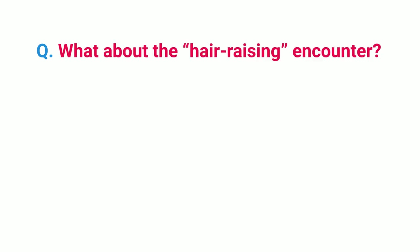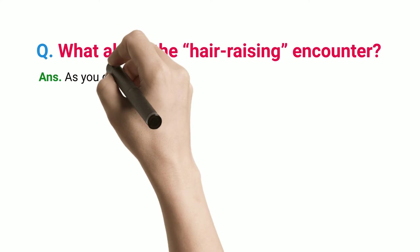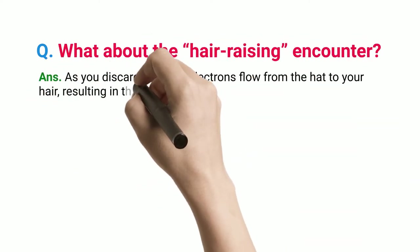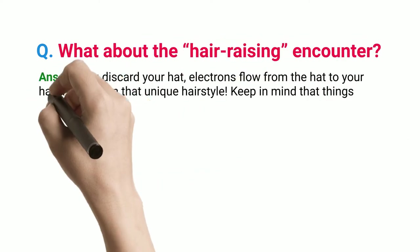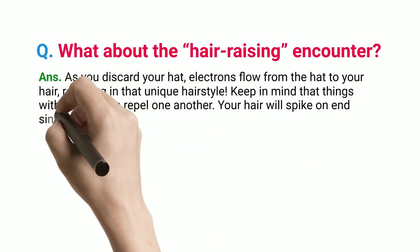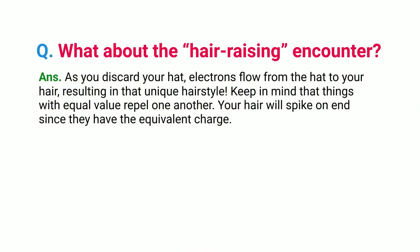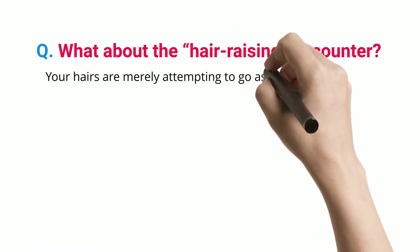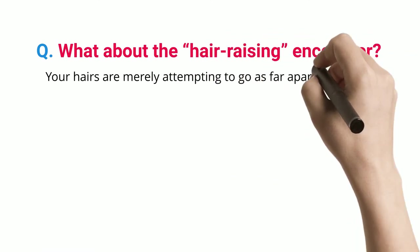What about the hair-raising encounter? As you discard your hat, electrons flow from the hat to your hair, resulting in that unique hairstyle. Keep in mind that things with equal charge repel one another. Your hair will spike on end since they have the equivalent charge — your hairs are merely attempting to go as far apart as feasible.